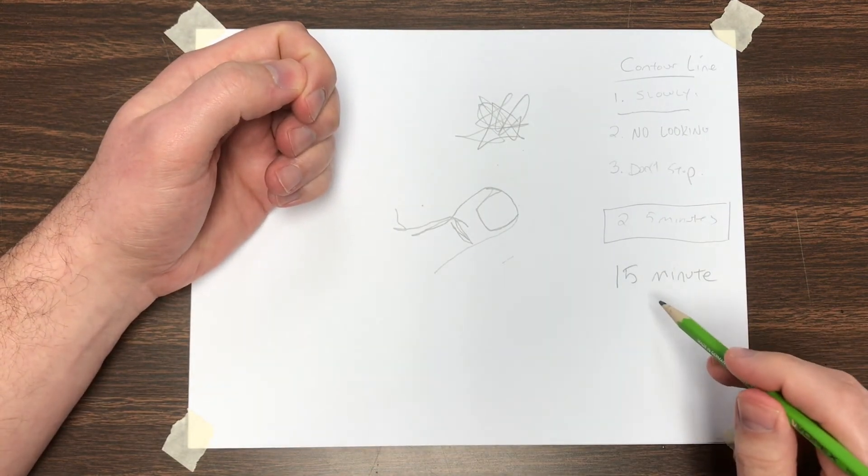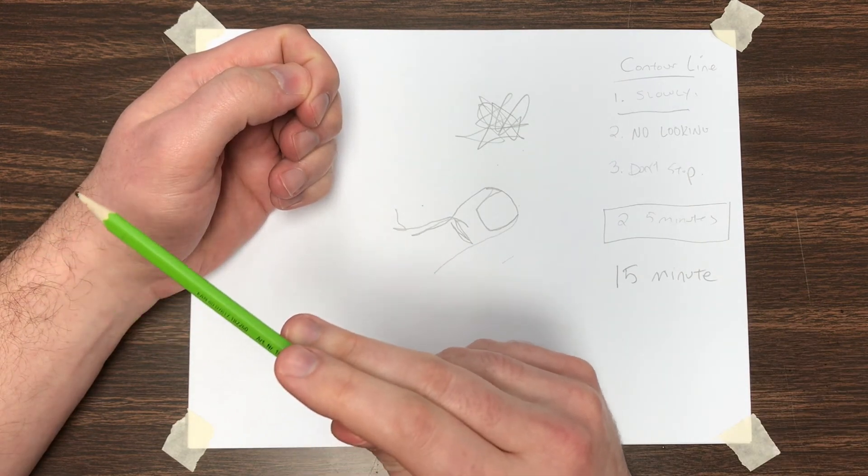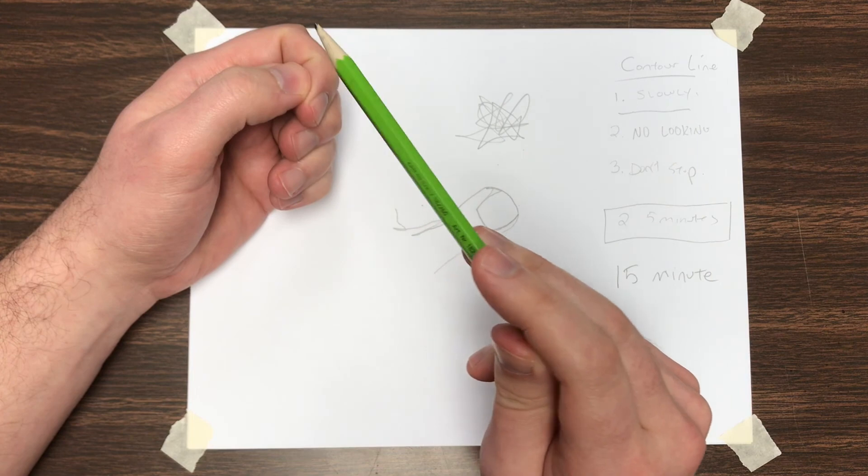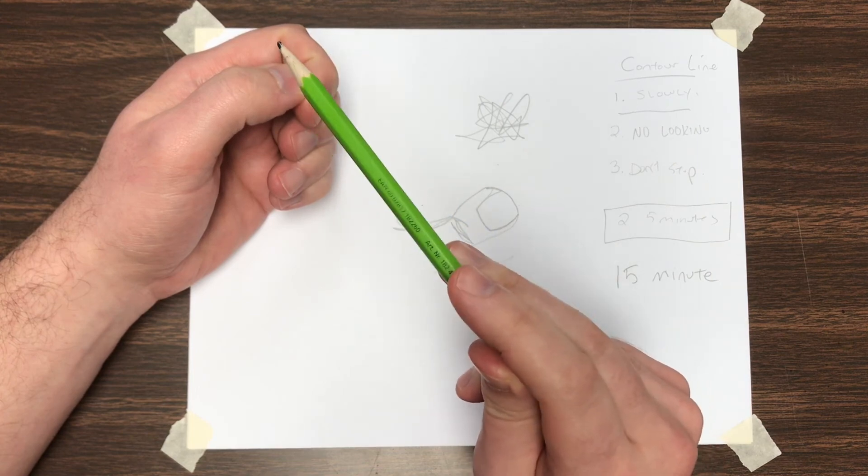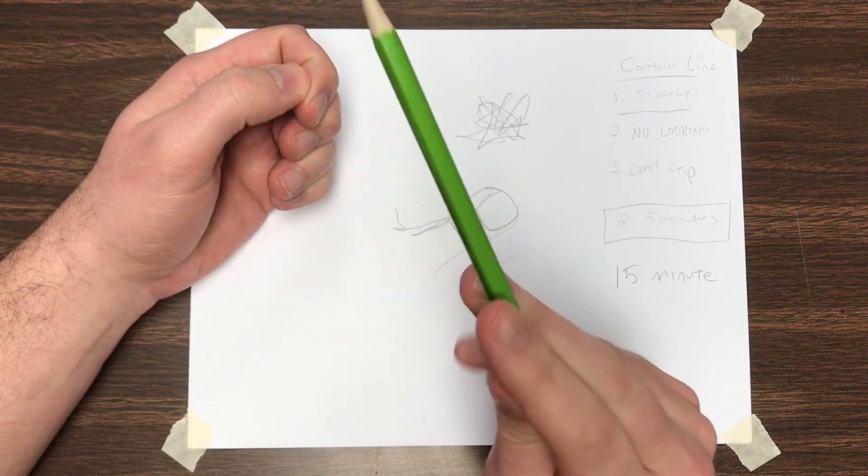And so in the 15-minute drawing, you're going to draw all of the hand that you see, all the wrinkles, every single fold, knuckle, nail, hair, everything.